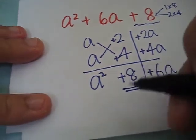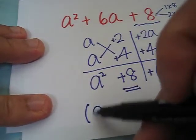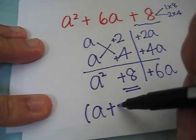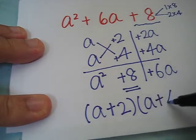it is factorized and we get (a + 2) times (a + 4).